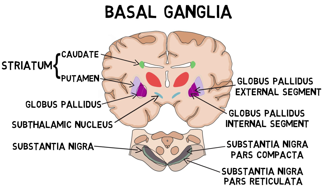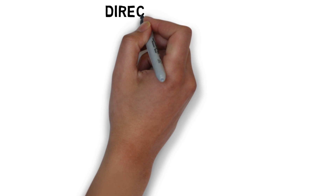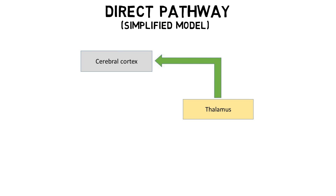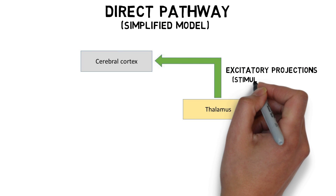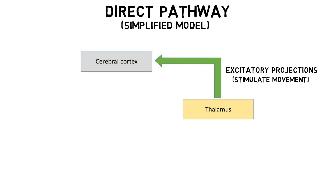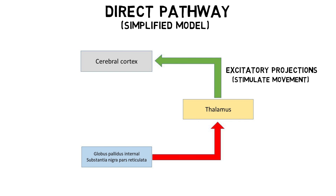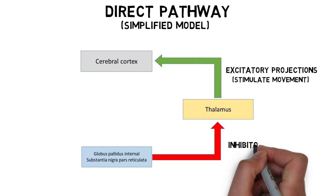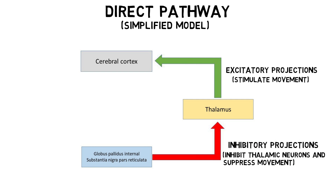The direct pathway is a circuit in the basal ganglia best known for its hypothesized role in movement. The direct pathway model involves glutamate neurons that project from the thalamus to motor regions of the cerebral cortex, and these excitatory projections are thought to be involved with stimulating movement. Neurons from the globus pallidus internal and substantia nigra pars reticulata, however, project to the thalamus and maintain a steady release of GABA, which inhibits thalamic neurons and suppresses movement. This mechanism is thought to be important in keeping unwanted movements from occurring.